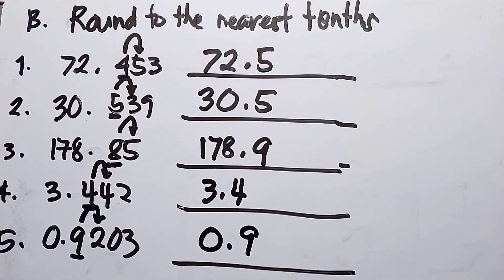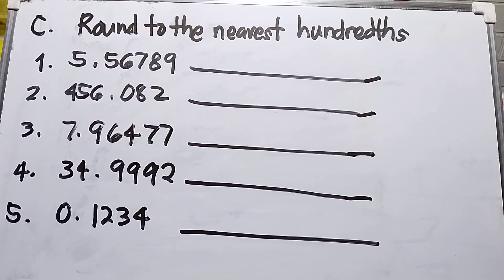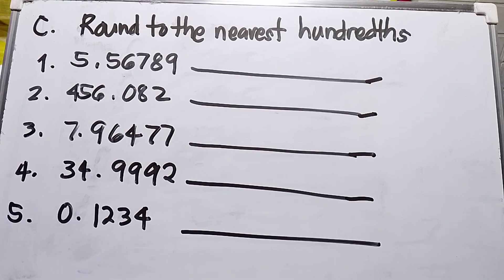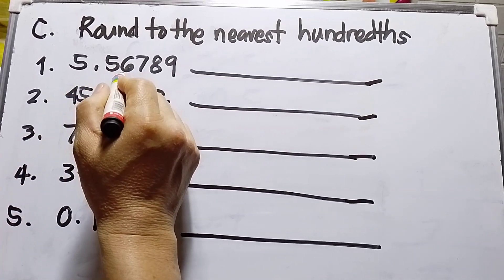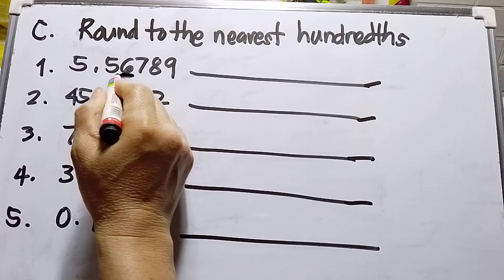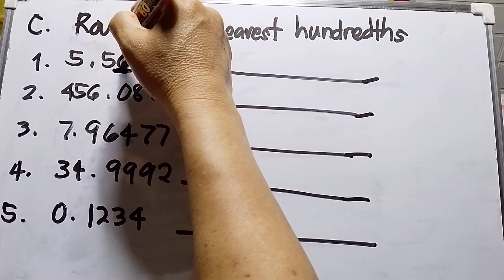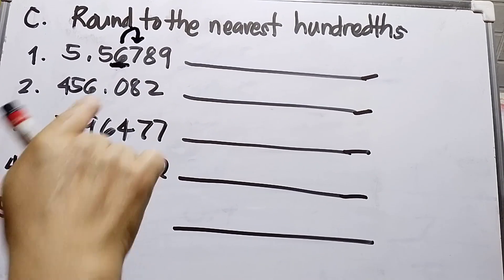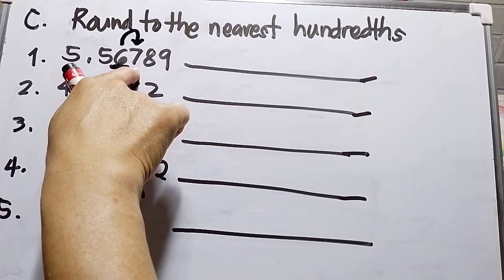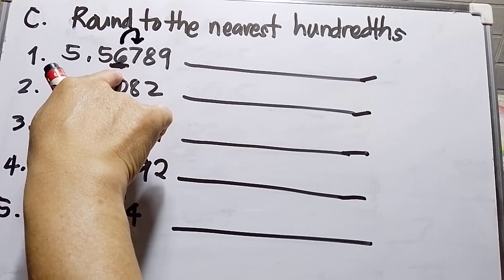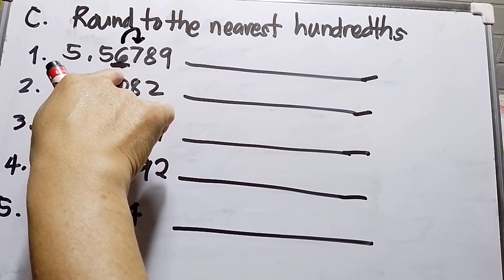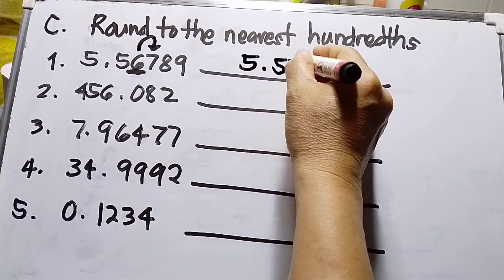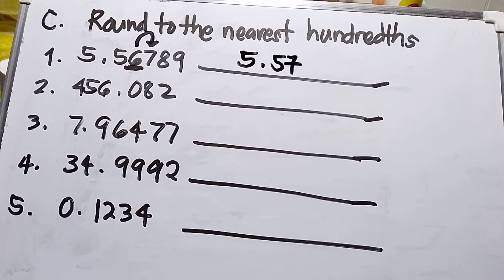Now let's move to letter C: round to the nearest hundredths. For number one, the hundredths place is digit 6. I underline digit 6 and make an arrow pointing to digit 7 to its right. Since 7 is more than five, I add one to 6, making it 7. The answer for number one is 5.57.